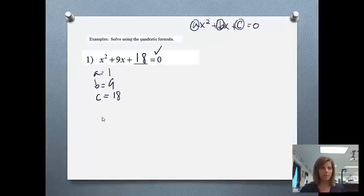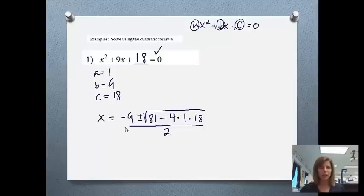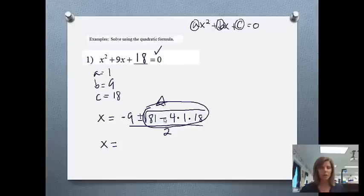Now we'll start singing the song and fill things in. x equals opposite b — the opposite of 9 is negative 9 — plus or minus square root b squared: 9 squared is 81, minus 4ac: 4 times 1 times 18, all over 2a: 2 times 1 equals 2. The part under the square root: I'm going to show you on the calculator how to plug it in. Type second square root, then 81 minus 4 times 1 times 18, then press Enter. I got 3.